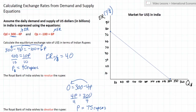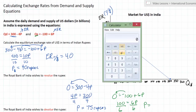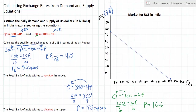Let's now plot the supply curve for dollars in India. We can start by finding the P intercept of supply by setting Qs equal to 0 and solving for P: 0 equals negative 100 plus 6 times the price, so 100 equals 6P, and dividing both sides by 6 gives us a price intercept of 100 divided by 6, which is 16.67 rupees. So at a price of 16.67 rupees our supply curve will begin, right around here on the graph.